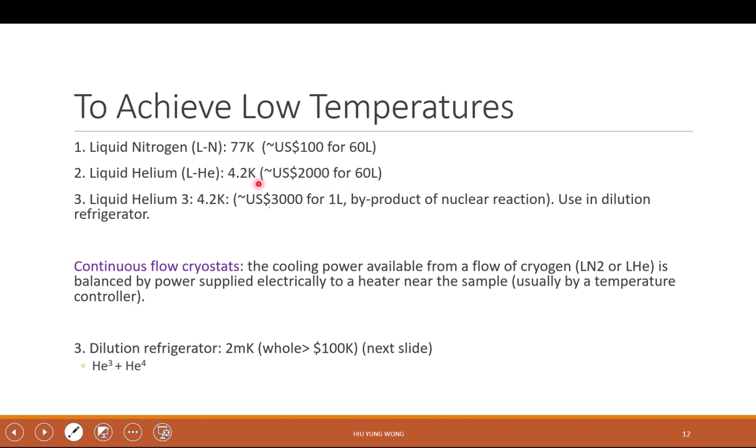So this is why we always keep, when in the literature you will see two numbers, 77 Kelvin and 4.2. Because if you are interested in this high range of temperature, then you just buy liquid nitrogen and immerse the whole machine. And if you want to go to 4.2, then you buy liquid helium, but it is much more expensive.